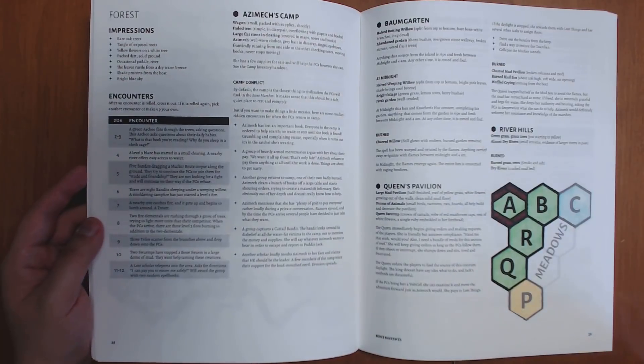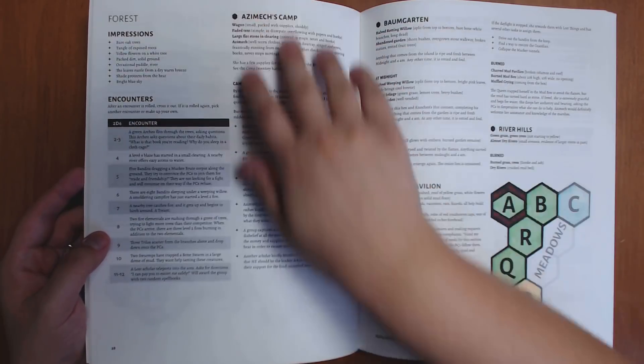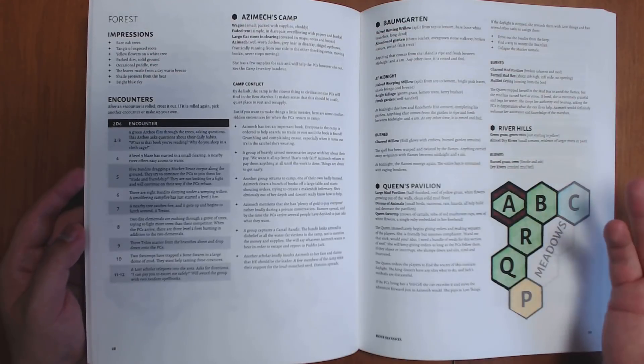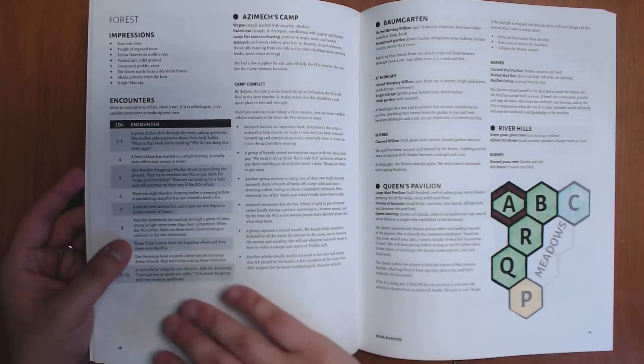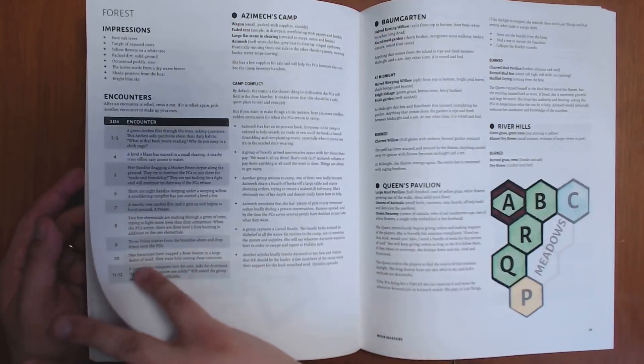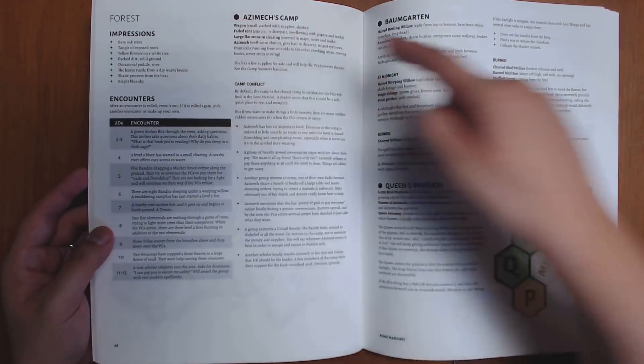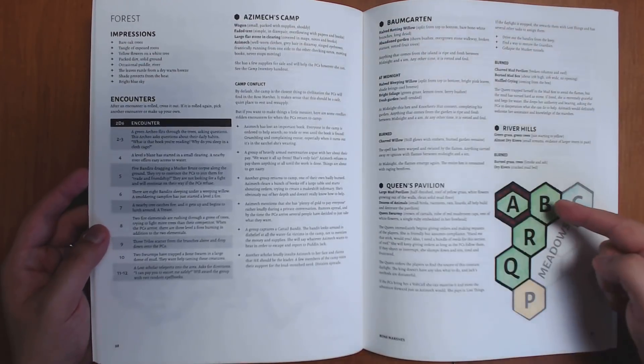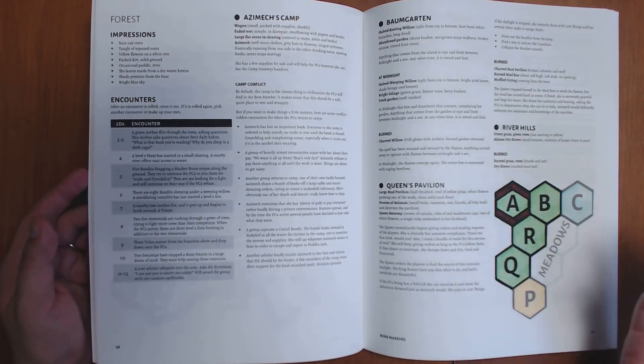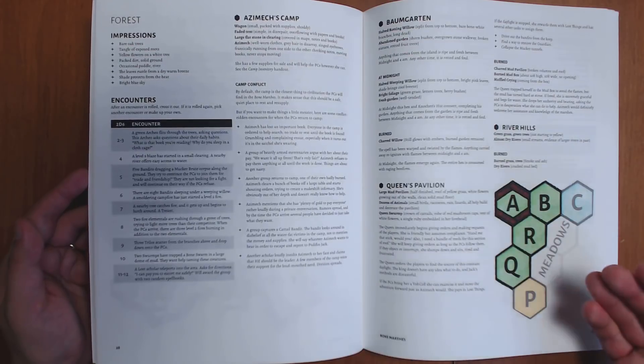Now, the thing that took me a minute or so to understand is that I was reading these instructions here, or these descriptions, and I couldn't figure out what hex they were referring to, and then I realized that all the hexes are labeled with letters from A to K, and the first letter of each description is what it's referring to. So Azimex camp is A. The bomb garden is B. The queen's pavilion is Q. That's fun, and it's clever. I really wish it was spelled out, though, or if it was, I missed it because it took me a little while to figure out that that's what was happening.